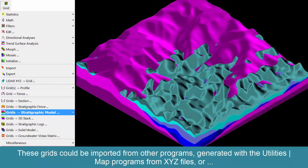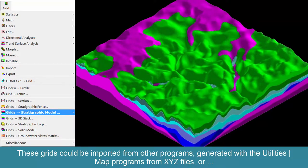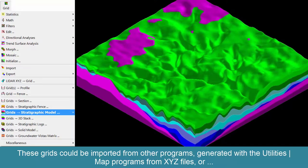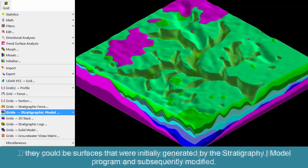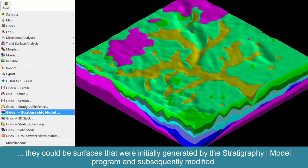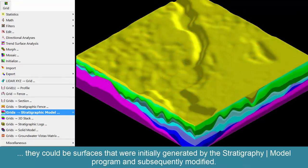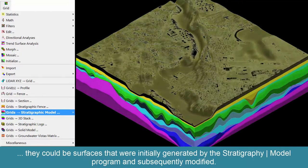These grids could be imported from other programs, generated with the utilities map programs from XYZ files, or they could be surfaces that were initially generated by the stratigraphy model program and subsequently modified.